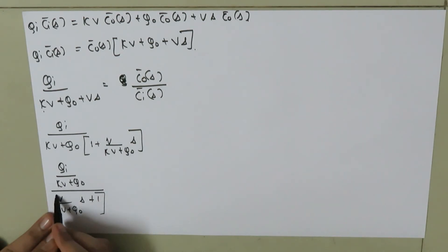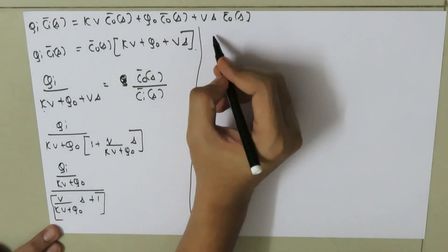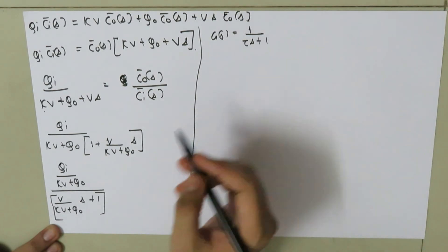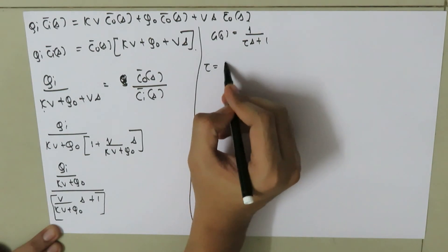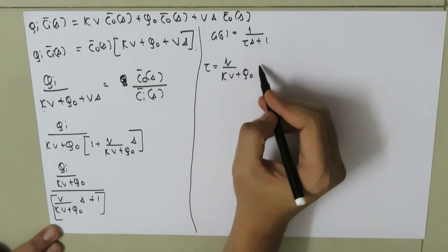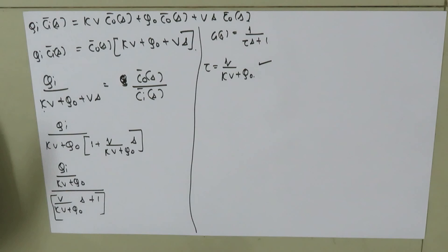Comparing this with the general first order transfer function G(S) equals K-process divided by (tau times S plus 1), we identify that the time constant tau equals V divided by (KV plus QO). This is the time constant for the continuous stirred tank reactor. This concludes the discussion of the dynamic behavior of a first order control system using the CSTR example. Thank you for watching.